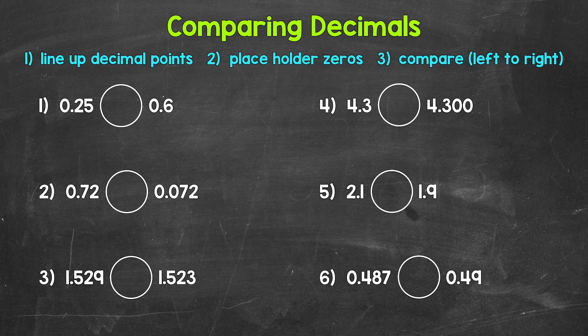Let's jump into number one, where we are comparing 25 hundredths and 6 tenths. Now, please keep in mind, we can't automatically say that 25 hundredths is greater because it has more digits or because 25 is greater than 6. It doesn't work that way with decimals. The length of a decimal — the number of digits — does not determine which decimal is greater.